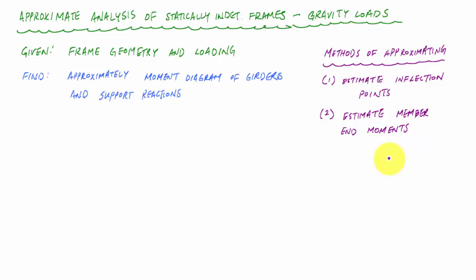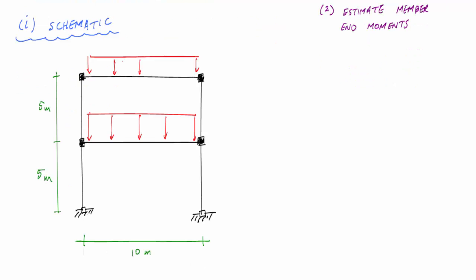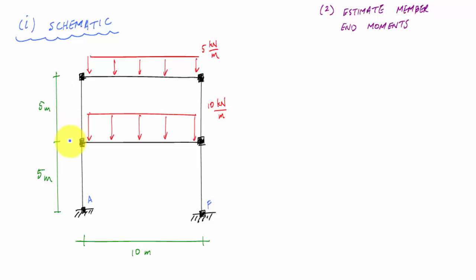Let me show you what the frame looks like. It's got moment connections at all the dark squares. We'll call this A is fixed, F is fixed, and I have moment connections at B, C, D, and E.